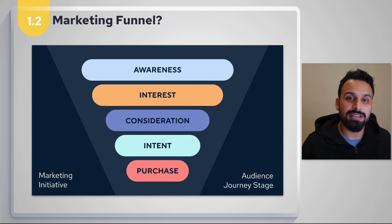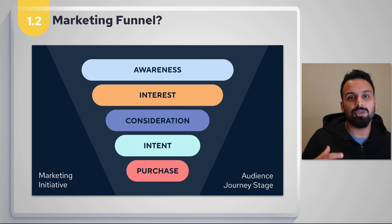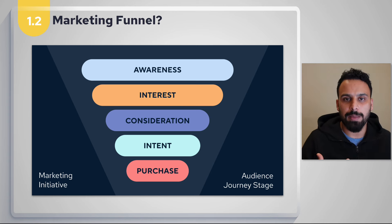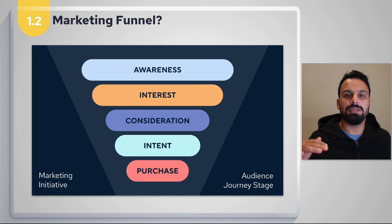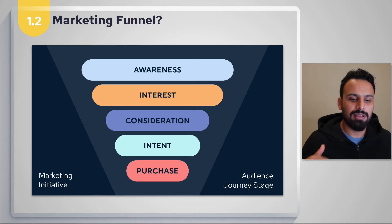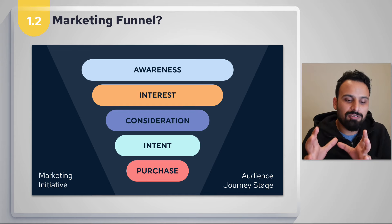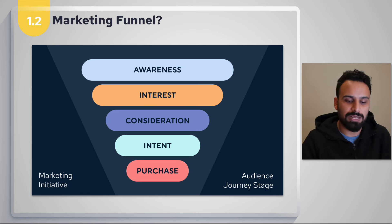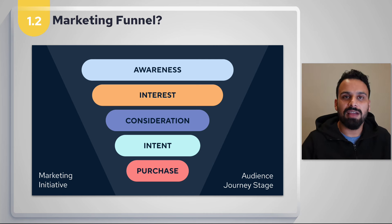Consideration is best explained with an example. Take Renault — I know about them, so I'm in their awareness bucket. I'm interested in their new car launch, so I'm in their interest bucket. But if I had to buy a car, I wouldn't consider Renault — I'd go with Audi, BMW, Nissan, Honda, or Toyota. The funnel tapers because among all aware people, only fewer will be interested, and even fewer will consider the brand.